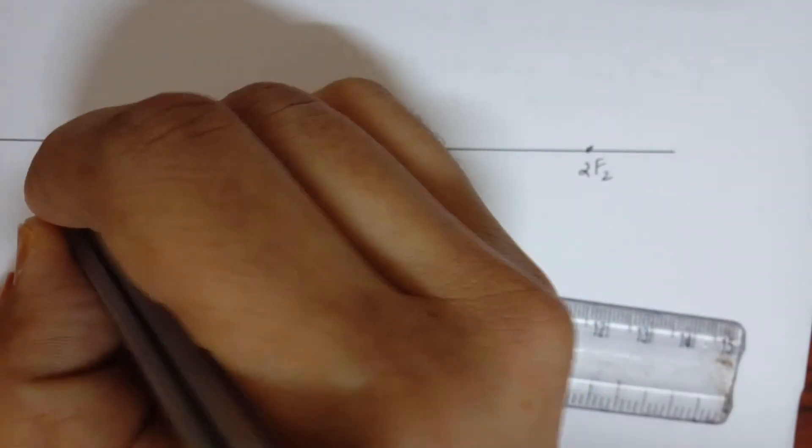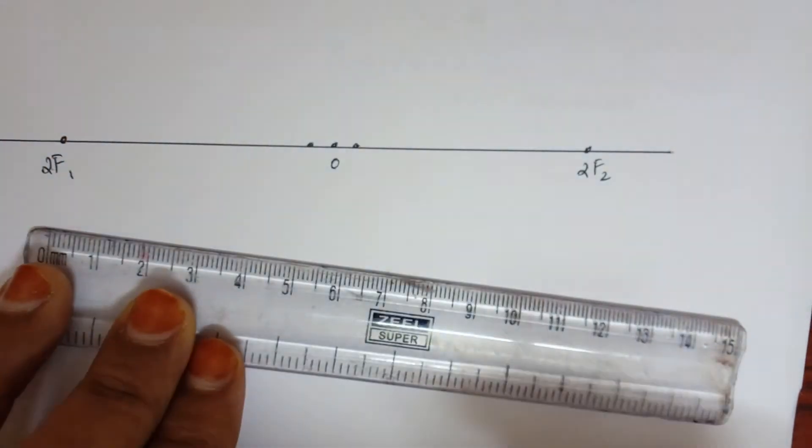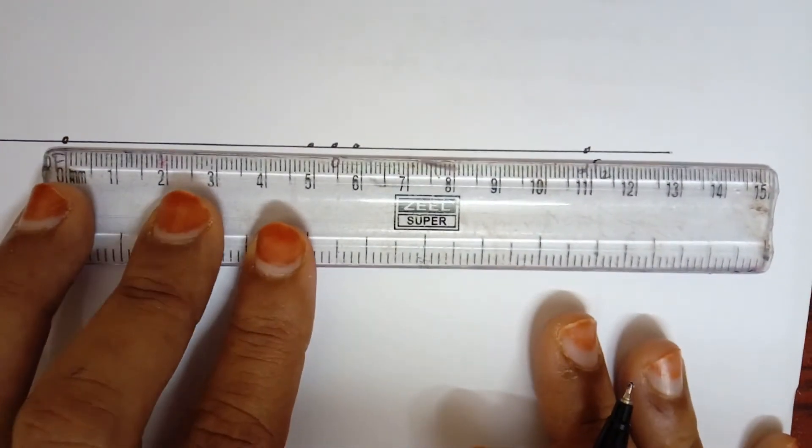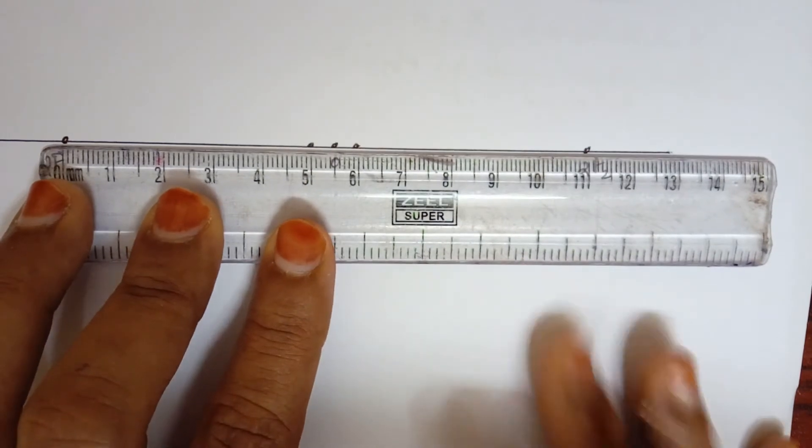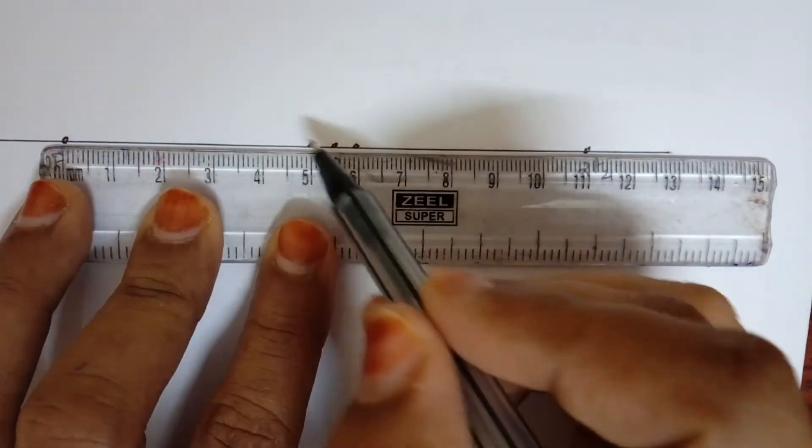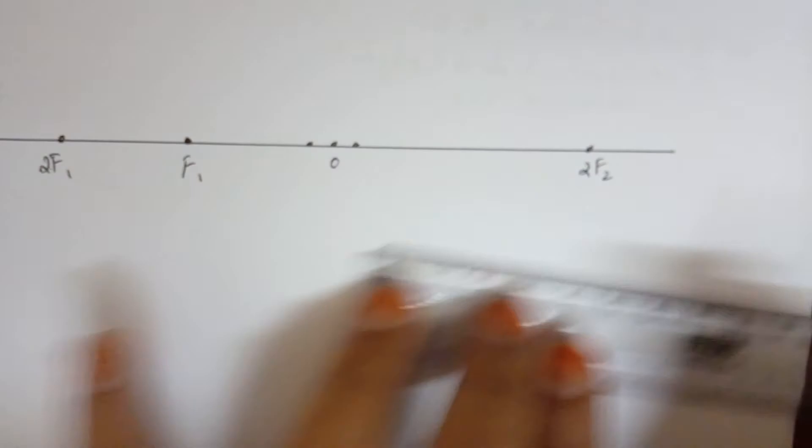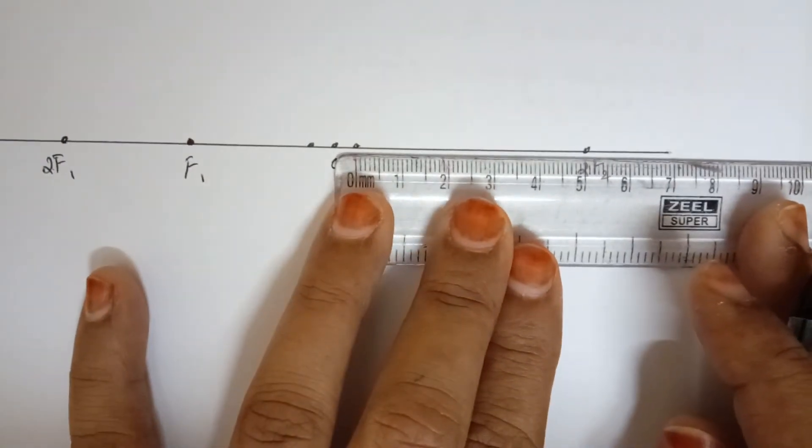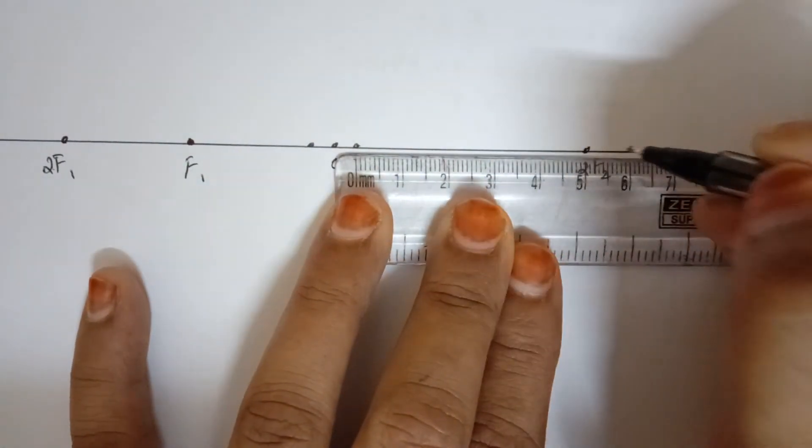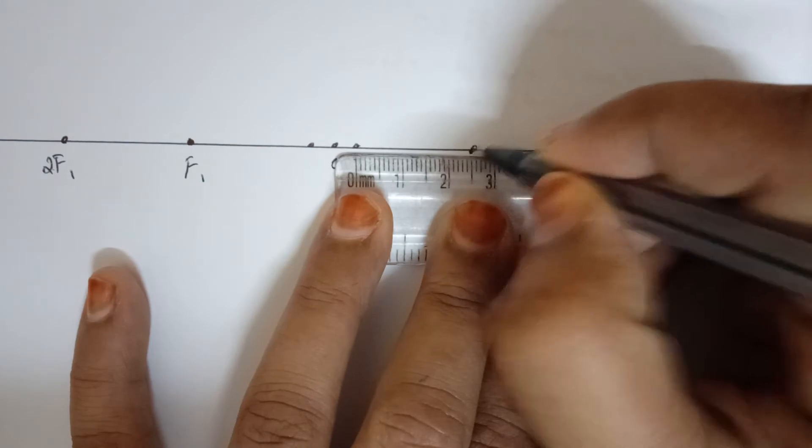Then the distance between this and the first point is five centimeter. I'm going to mark the midpoint of that and name it as F1. Same goes for the last two points, five centimeter gap. I'm going to mark it and I'm going to name it as F2.